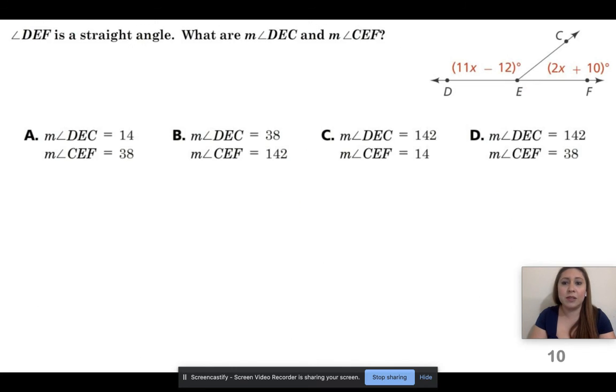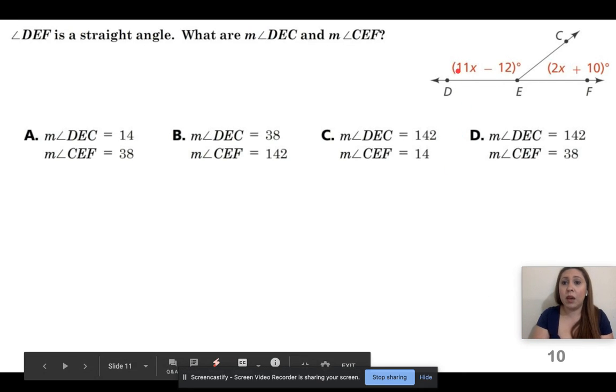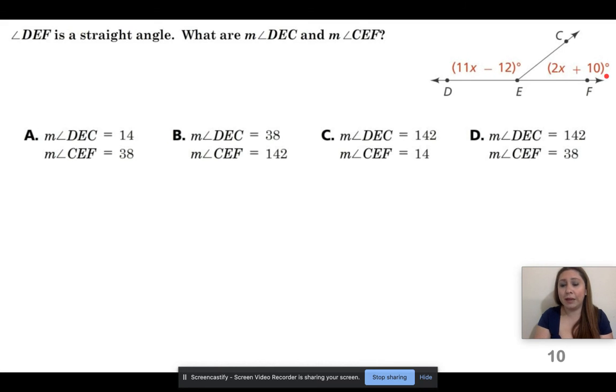All right, so remember, I wasn't just looking for x. I needed both of those angles, not just the x. All right, so press pause, well not yet. And you are going to do this one on your own. So do the exact same thing. 11x minus 12 plus 2x plus 10, all of that is going to equal, it's a straight line. So think back, what does a straight line equal?